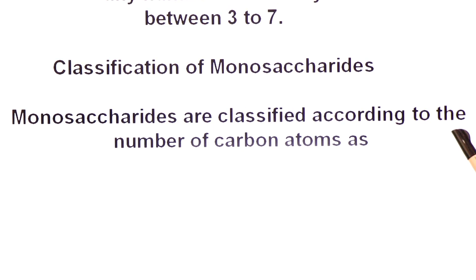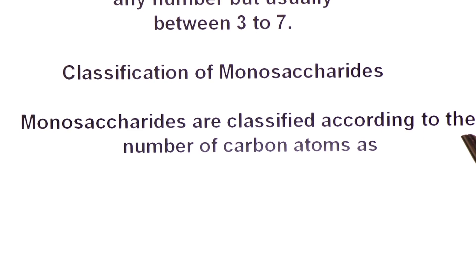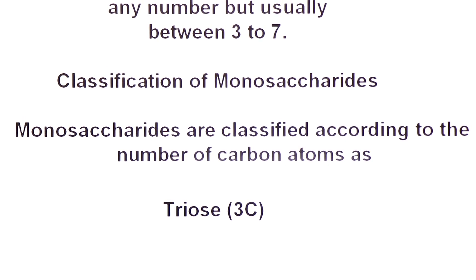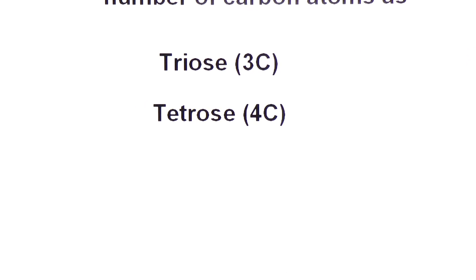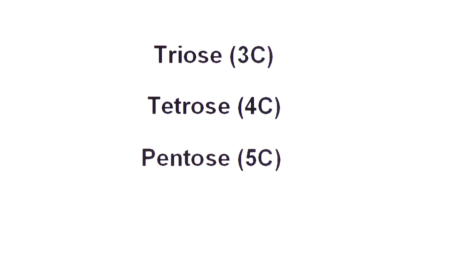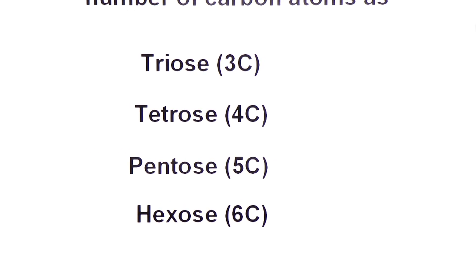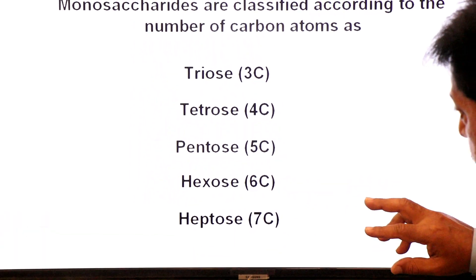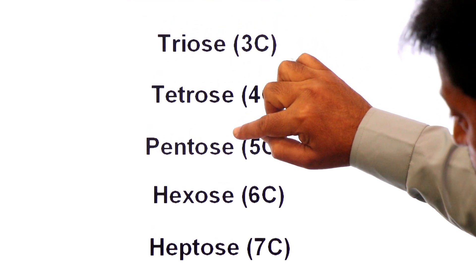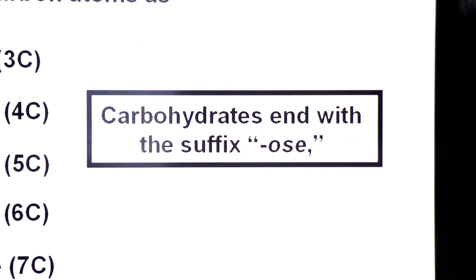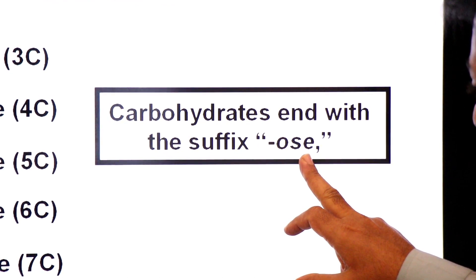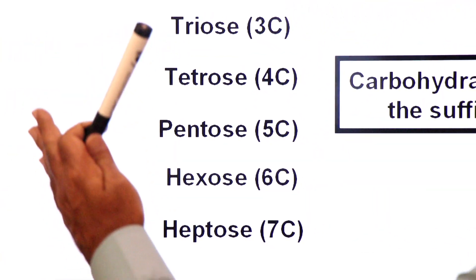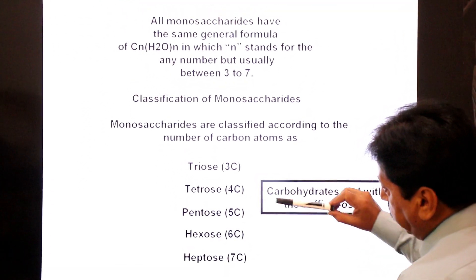Monosaccharides are classified according to the number of carbon atoms they contain. A monosaccharide having three carbons is called a triose; four carbons — tetrose; five carbons — pentose; six carbons — hexose; seven carbons — heptose. Notice that all these terms end with the suffix -OSE, just as enzyme names end with -ASE. Carbohydrate names end with the suffix -OSE.